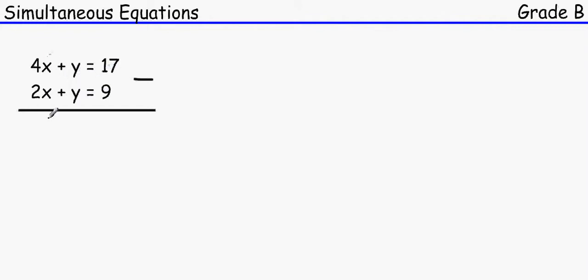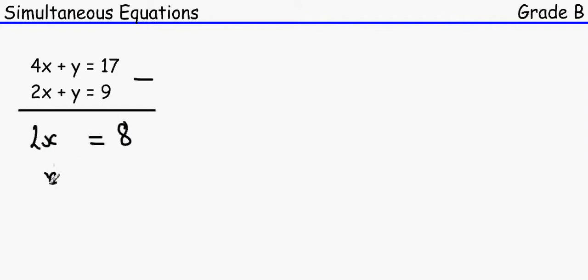So we get 4x minus 2x which makes 2x, y minus y makes nothing, and 17 minus 9 equals 8. So 2x equals 8.